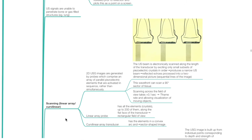Scanning occurs in the linear array or curvilinear probe. 2D ultrasound images are generated by probes comprising an array of parallel piezoelectric elements activated in sequence rather than simultaneously. The ultrasound beam is electronically scanned along the length of the transducer by exciting small subsets of crystals in order, producing a narrow ultrasound beam. Reflected echoes are processed into a two-dimensional picture. This wave front can scan a 90-degree sector of tissue. Scanning across the field of view takes 0.1 seconds. The linear array probe has up to 200 crystal elements lying along a flat surface producing a rectangular field of view. A curvilinear array transducer has elements arranged in a convex arc, producing a sector-shaped image.